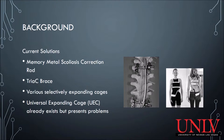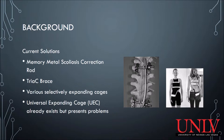There are several current market solutions that can rival the UEC. The first is the memory metal scoliosis correction rod, pictured on the right. This method of correcting scoliosis is currently the standard for treatment. However, it is bulky and can create infection or bruising if implanted incorrectly. The rod can also increase the risk of death if multiple surgeries are performed to adjust it.